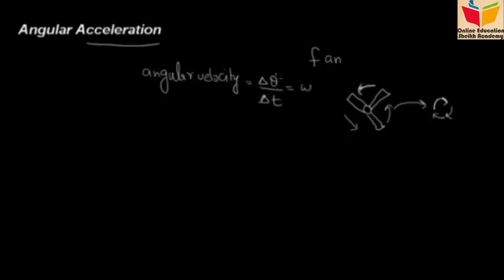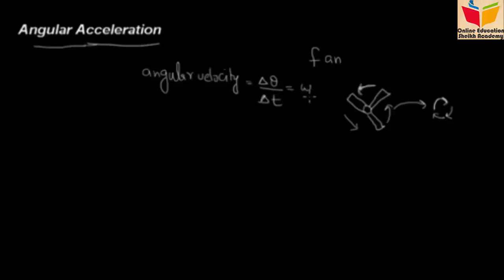The angular velocity is denoted by omega. So this is the angular velocity. And if the angular velocity changes, or omega changes, then we will say that the angular acceleration is occurring. The angular acceleration is the change of angular velocity with respect to time.